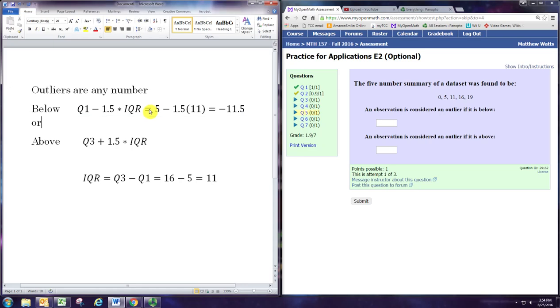So any number less than negative 11.5 would be considered an outlier for this dataset. Similarly, we can find an upper bound for numbers in the dataset that are not outliers.